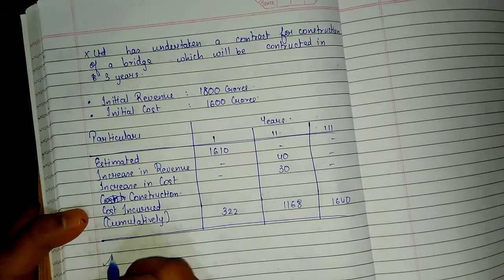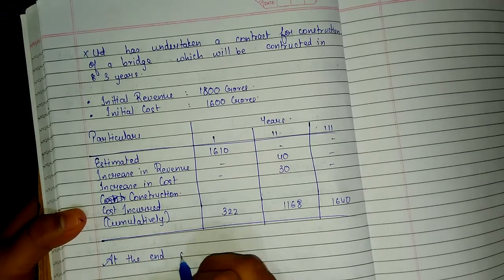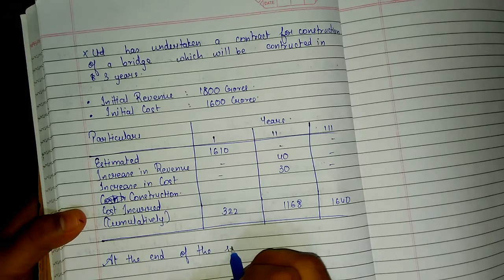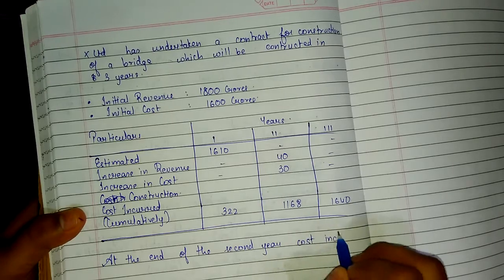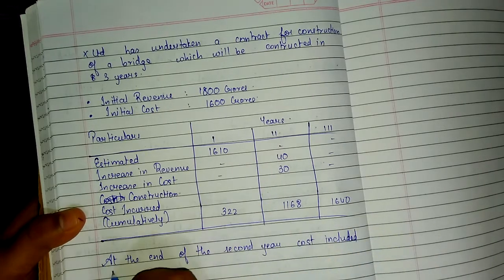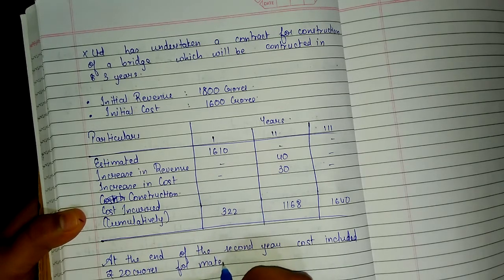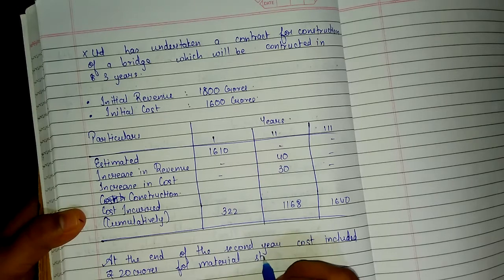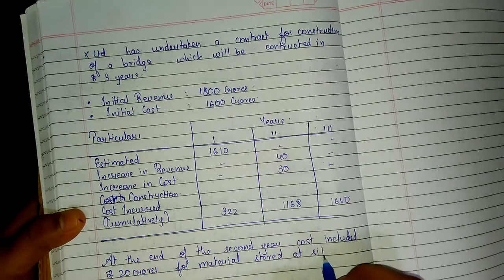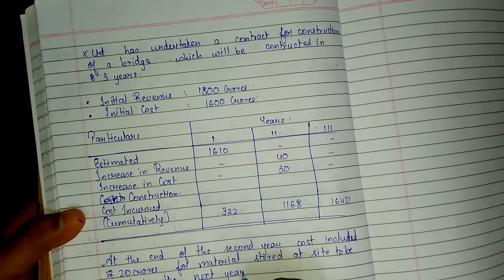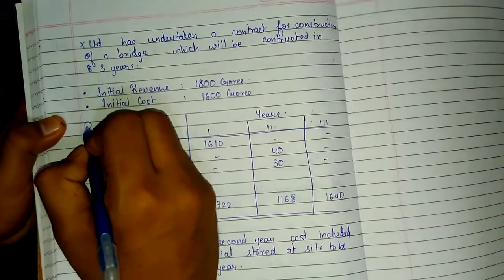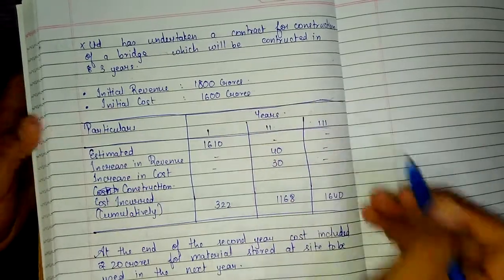There is an adjustment at the end of the second year: cost included rupees 20 crores for material stored at site, to be used in the next year. This is the complete question. If anyone has not copied, please pause the video and copy.